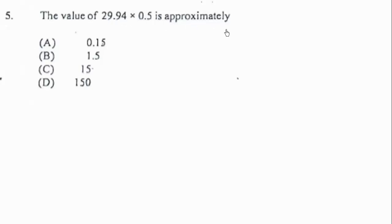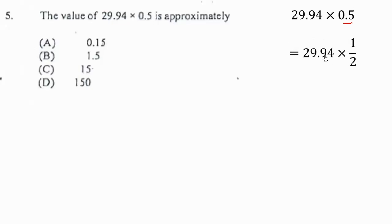Question 5: the value of 29.94 times 0.5 is approximately equal to what? We know 0.5 is the same as a half. We approximate by rounding 29.94 to the nearest whole number — 29 is almost equal to 30 — so half of 30 gives us 15. The correct answer is 15.